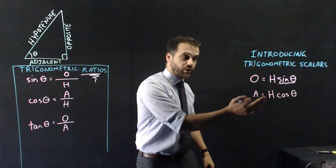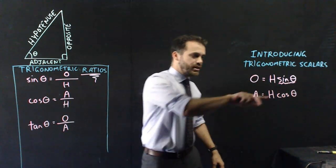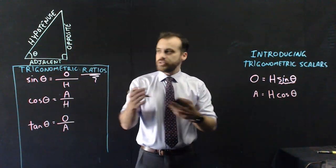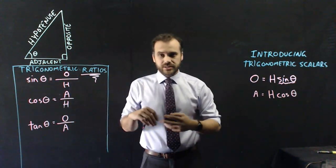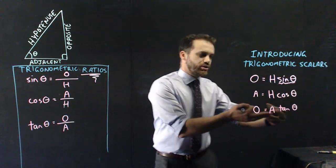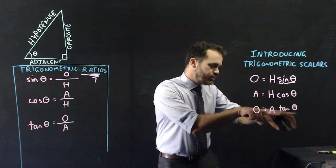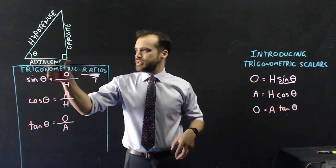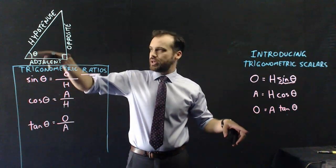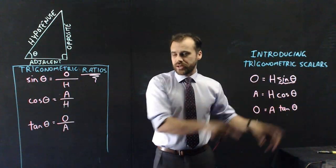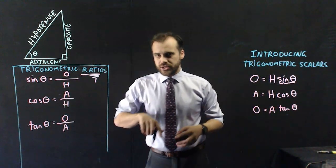We have two other trigonometric scalars as well. Adjacent equals hypotenuse cos theta. Cos theta is the trigonometric scalar that you multiply the hypotenuse to get the adjacent. And finally, opposite equals adjacent times tan theta. Tan theta is the trigonometric scalar that you multiply the adjacent by to get the opposite. Trigonometric scalars are way better than trigonometric ratios.